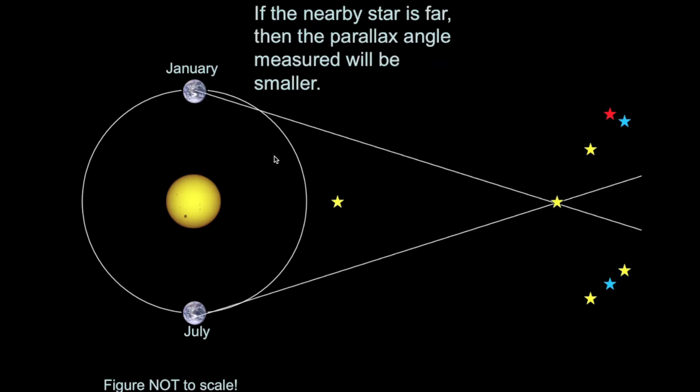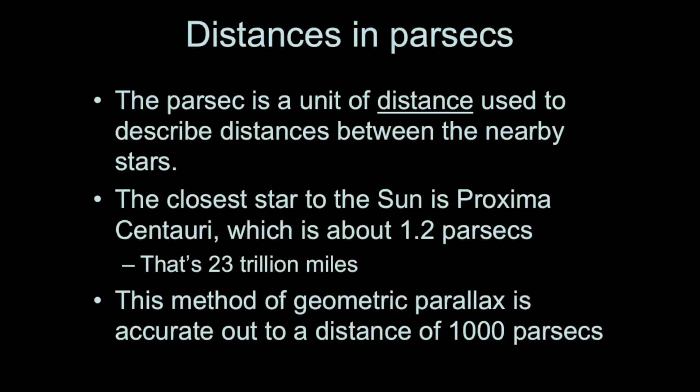But if a star is very far away, then its parallax angle will be smaller. It will appear to shift a smaller amount over the course of the year. And so, what this tells us is that we can use parallax to determine the distance to nearby stars.